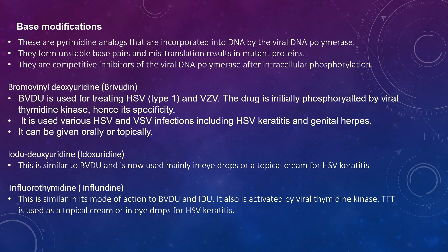Base modifications: these are pyrimidine analogs that are incorporated into DNA by the viral DNA polymerase. They form unstable base pairs and cause mistranslation and mutant proteins. They are competitive inhibitors of the viral DNA polymerase after intracellular phosphorylation. Bromovinyl-deoxyuridine (BVDU, brivudine) is used for treating HSV type 1 and VZV. The drug is initially phosphorylated by viral thymidine kinase, hence its specificity. It is used in various HSV and VZV infections including HSV keratitis and genital herpes, and can be given orally or topically. Idoxuridine (IDU) is similar to BVDU and is used mainly in eye drops or as a topical treatment for HSV keratitis. Trifluridine (TFT) is similar in mode of action to BVDU and IDU and is also activated by viral thymidine kinase. TFT is used as a topical treatment or in eye drops for HSV keratitis.